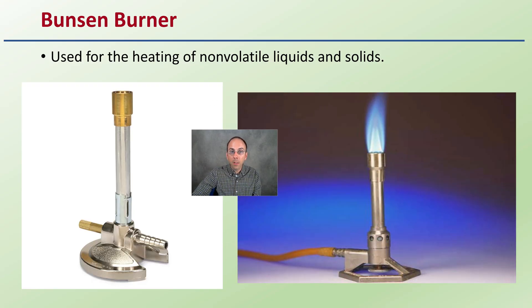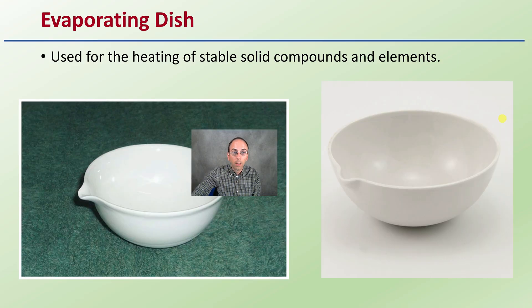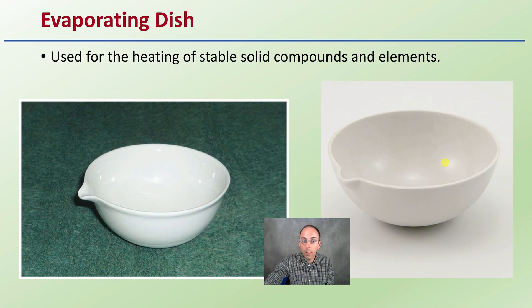The Bunsen burner is used for heating non-volatile liquids and solids because you have an active flame. Make sure if you're heating anything in the Bunsen burner with an open orifice, you're pointing it away from you and others. The evaporating dish is a ceramic dish used for heating stable solid compounds and elements, and used to evaporate or usually dehydrate certain substances.